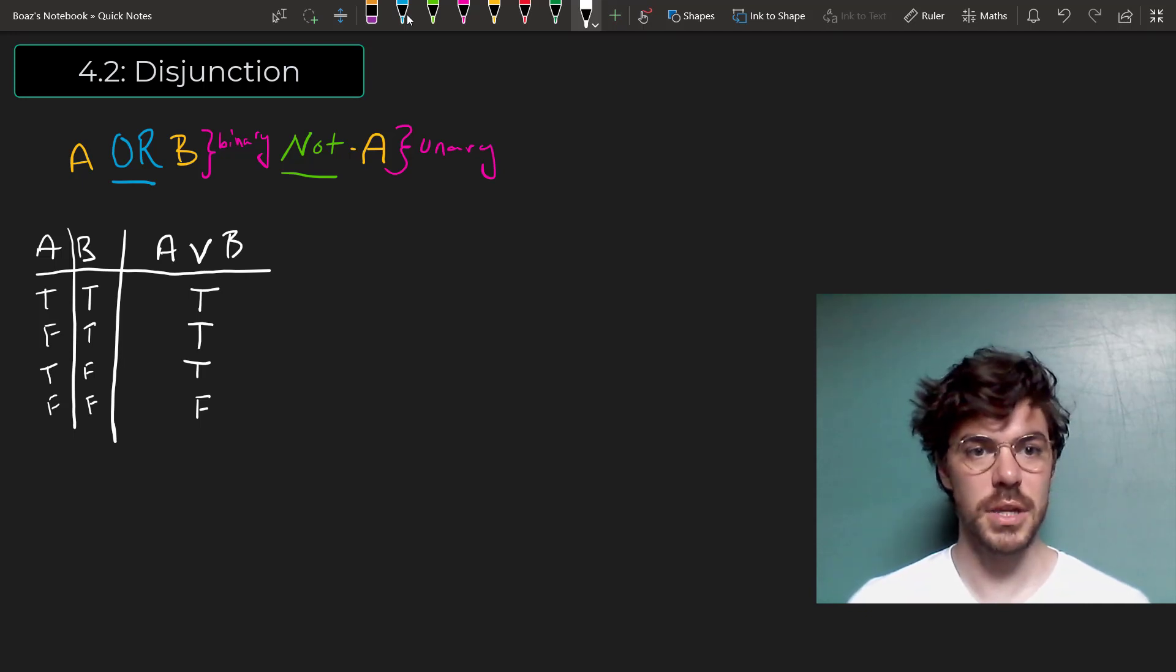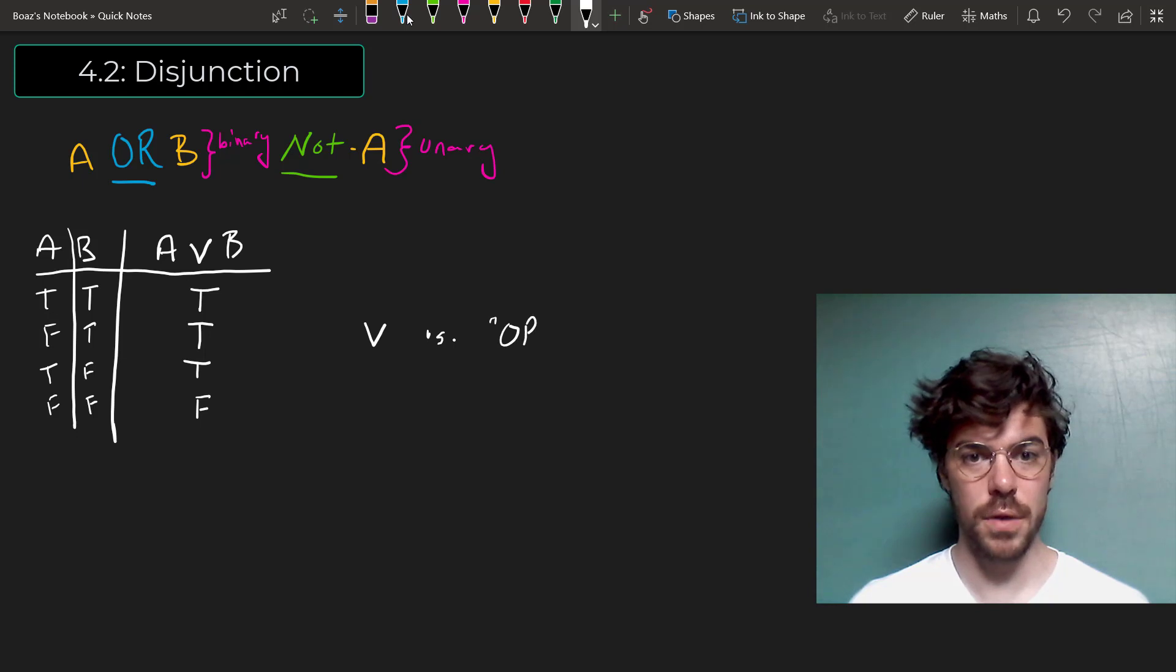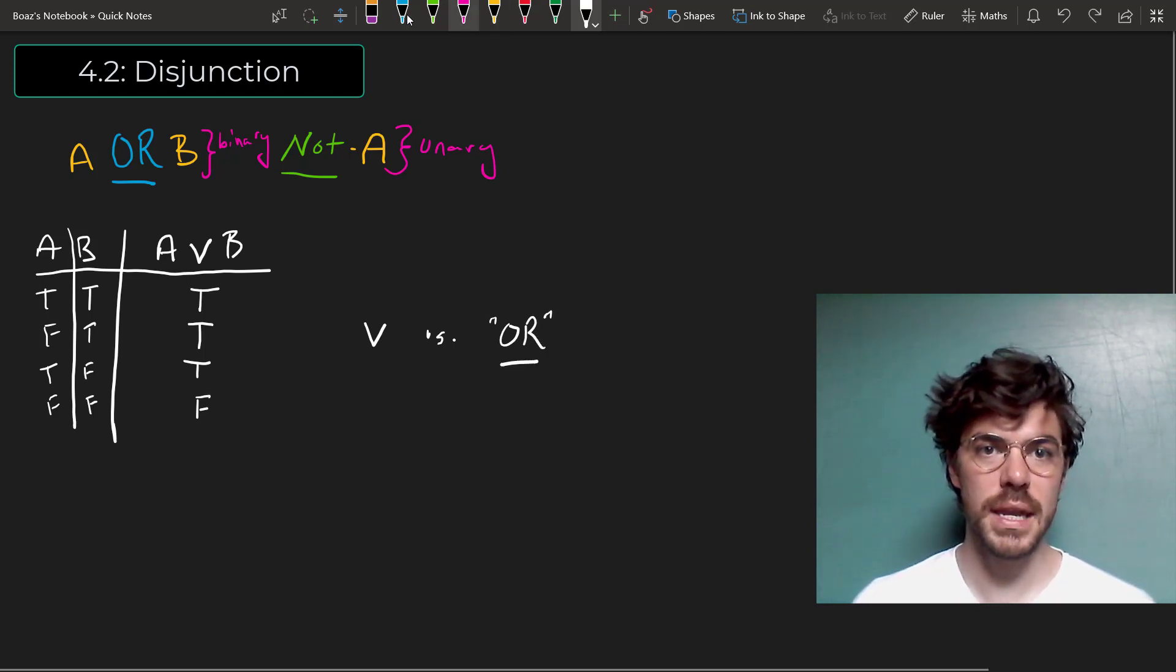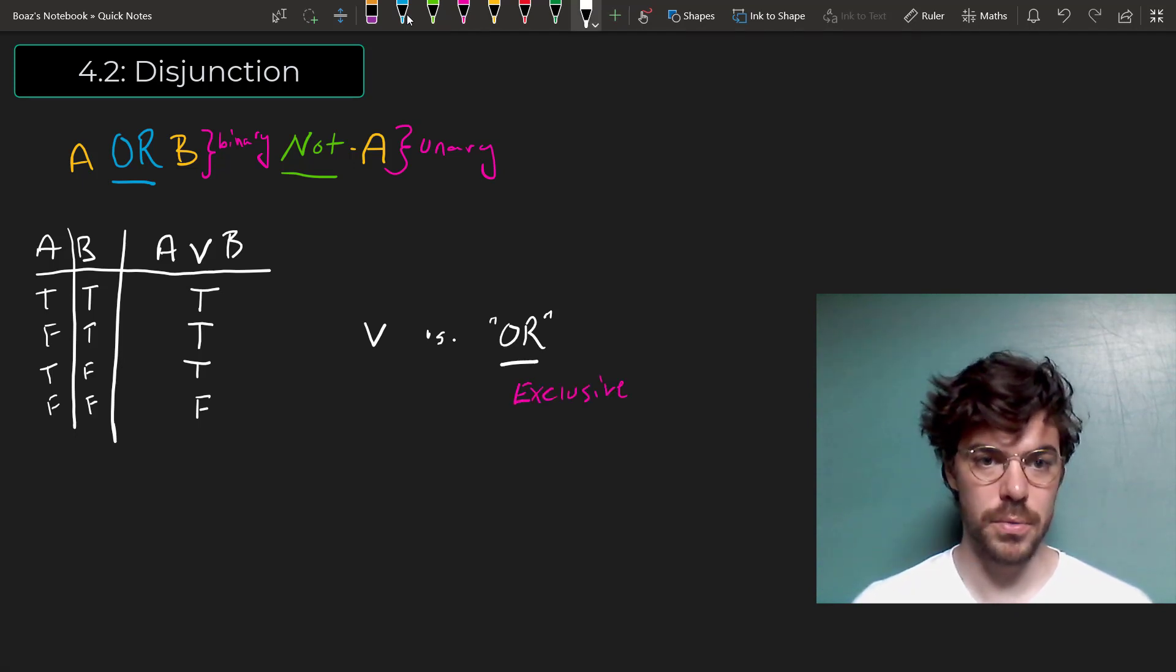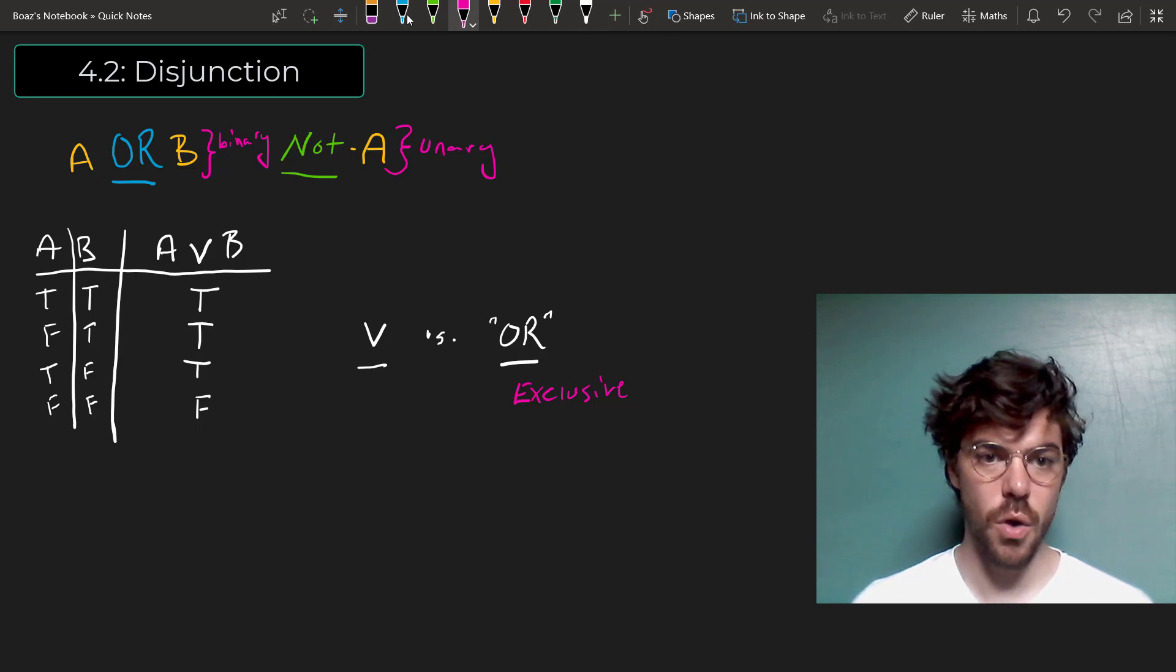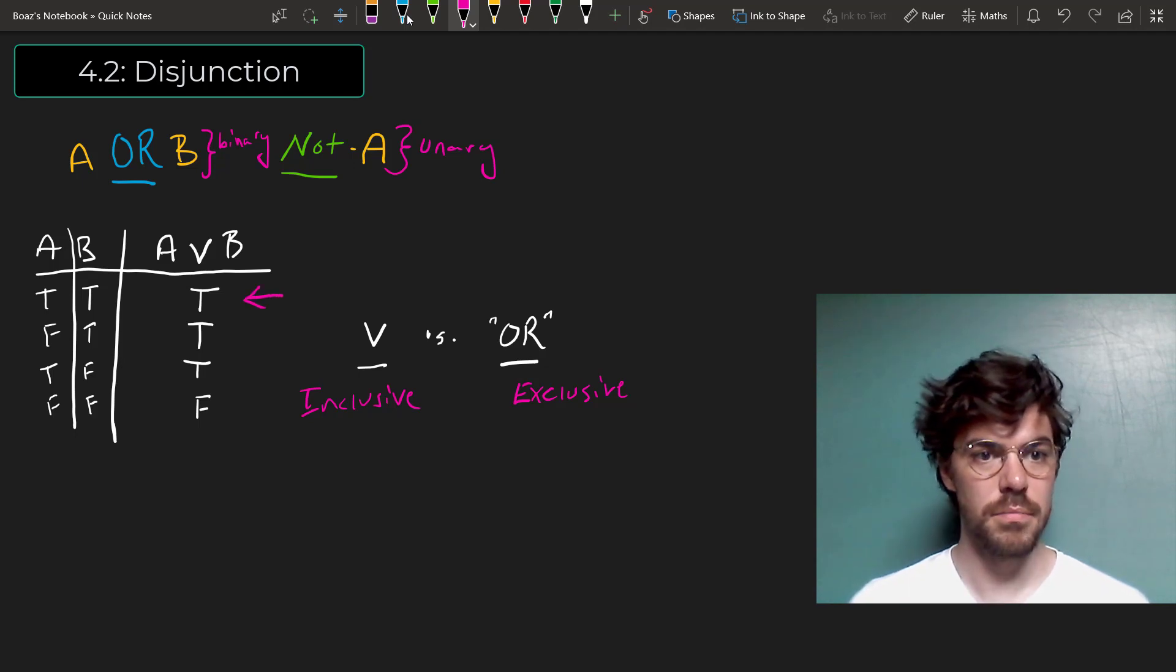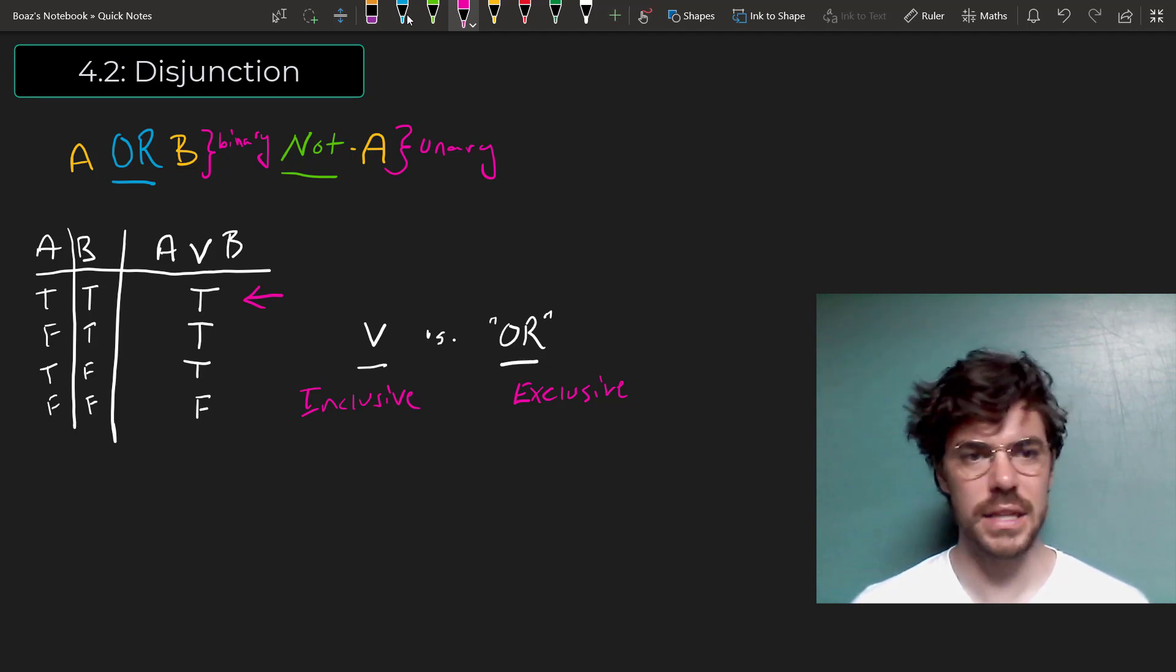Now this is the conspicuous difference between logical OR and the English term OR. Typically when we use OR in English, we mean it in what's called the exclusive sense. We mean A or B, but not both. But in first order logic, the OR sign is inclusive. And that means that it can be true when both A and B are true. And that's the one tricky thing about logical OR, that it works somewhat differently from how we're used to in English.